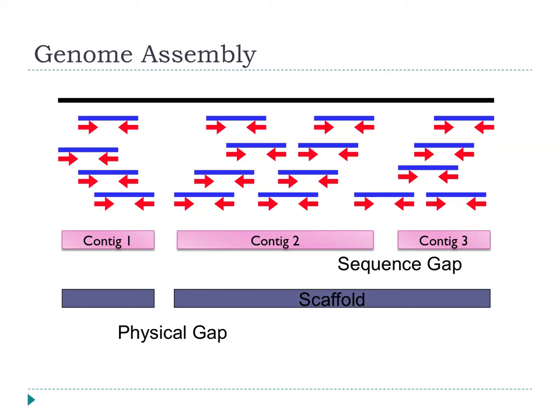There may be a few small highly repetitive regions you haven't quite managed to close yet. Physical gaps are much more of a problem with old-style Sanger sequencing, where sequences may be poisonous to the E. coli host. We tend not to see this with new high-throughput sequencing approaches where sequencing is all done in vitro. As long as we go to enough depth of coverage, we shouldn't get these kinds of gaps.